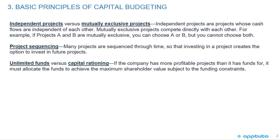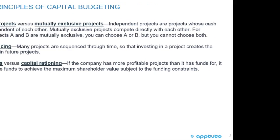Unlimited funds versus capital rationing: if the company has more profitable projects than it has funds for, it must allocate the funds to achieve the maximum shareholder value subject to the funding constraints. We'd add up all the projects within the capital budget that will give the highest NPV. And that's the last and only slide for this LOS.